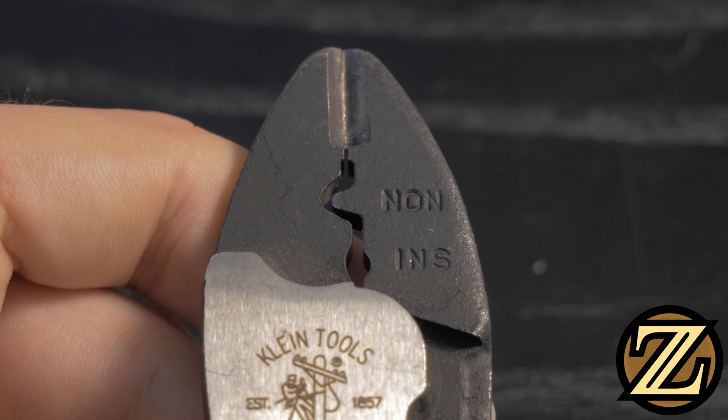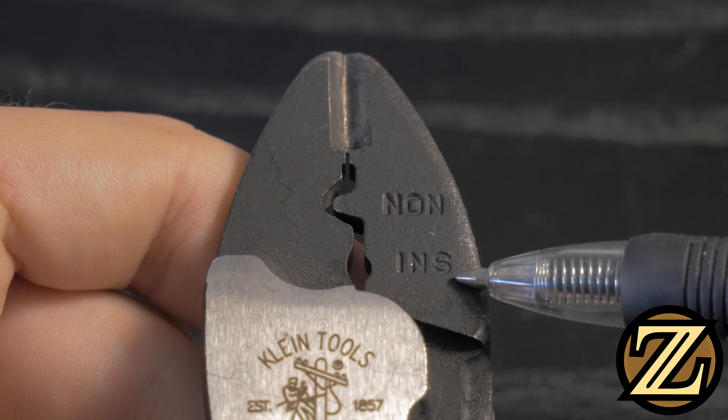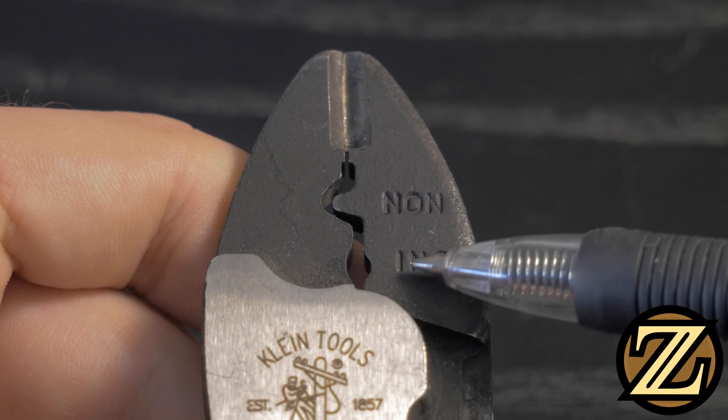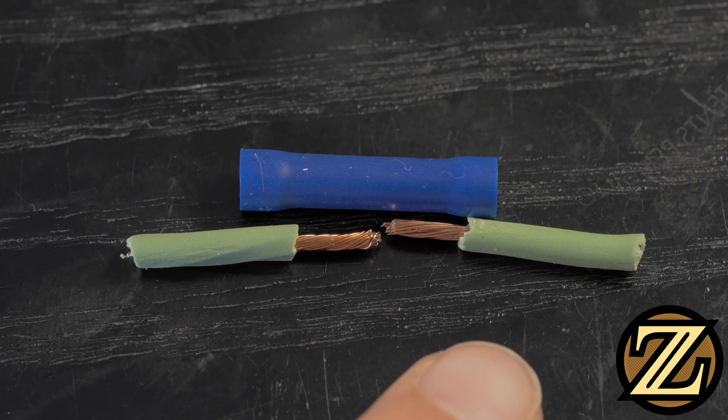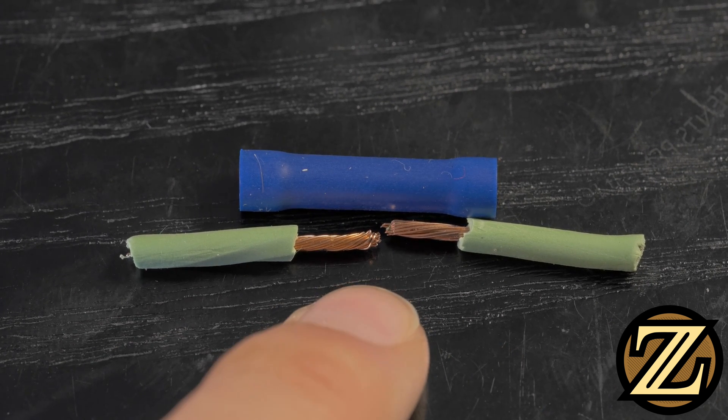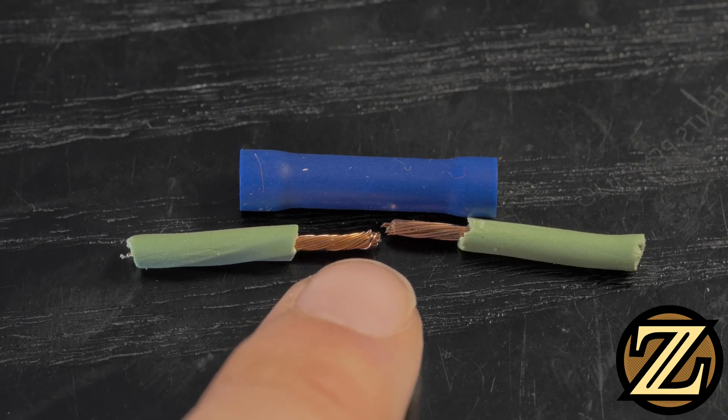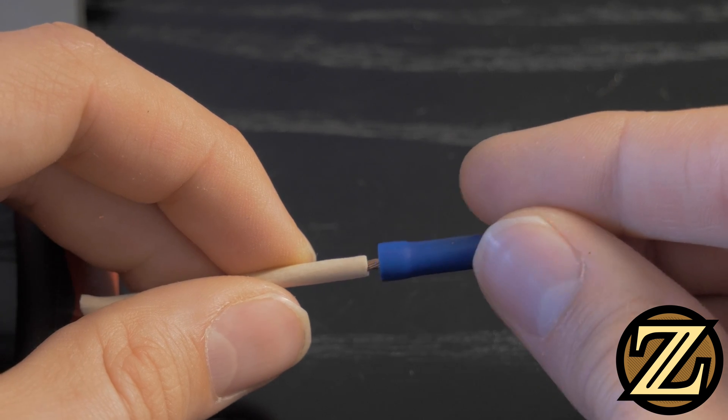Now let's take a look at this crimper here. We see that there are only two slots, one for non-insulated and one for insulated terminals. Since our butt splice is insulated, we'll be using this slot here. Now let's take a look at butt splices. Butt splices join two wires together. When you strip the wires, you want it such that the center of the wire is approximately in the center of the butt splice. Feed one end of the wire into the butt splice and then crimp it.